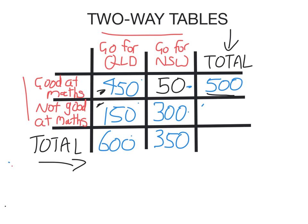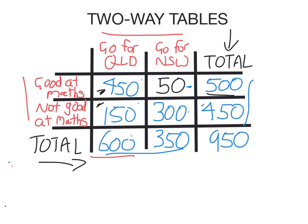And then what goes in here is 150 plus 300, which is 450. Now, these two numbers and these two numbers need to add to the same thing, or you've done something wrong. So there were 950 students surveyed in total. 600 of the 950 students go for Queensland, 350 go for New South Wales, 500 were good at maths, and 450 were not good at maths.